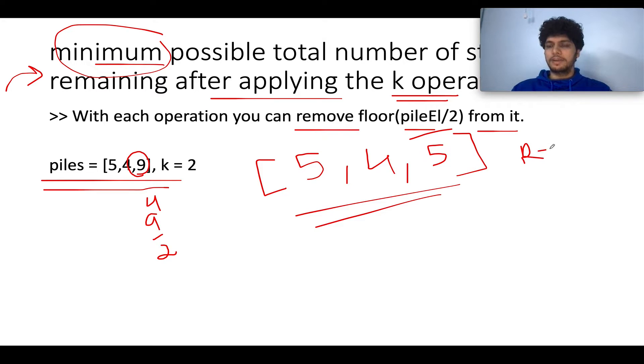So how many operations remain? One operation remains. And again what I am going to do next? I am again going to select that pile which has the maximum entry. Which one has the maximum entry? 5 has the maximum entry. So we have a collision for 5. So you can pull out any of the 5. So 5 by 2 gives you 2 and let's subtract 2 from this pile of 5 stones. And what remains? What remains is 3, 4 and 5. This is the final state.